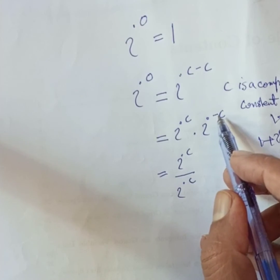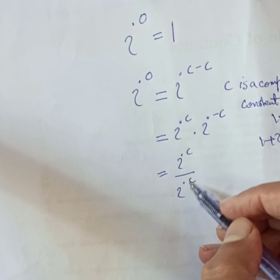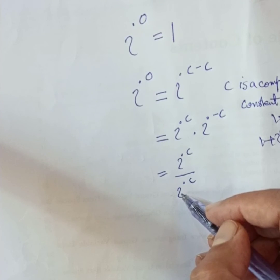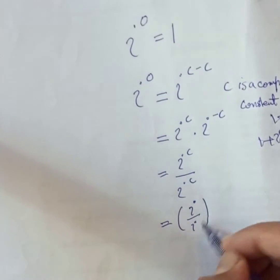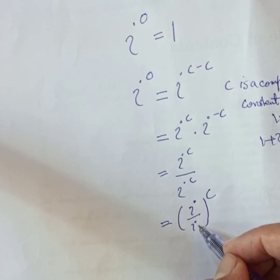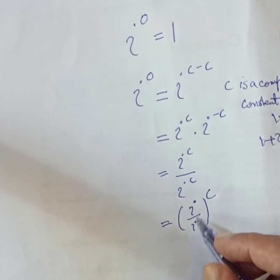This power is negative so I can move it in the denominator. So this way we have iota power c. Now again I can write it this way: iota over iota whole power c. So if I cancel out this iota, you get 1 power c.